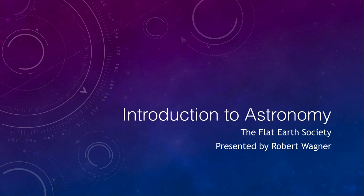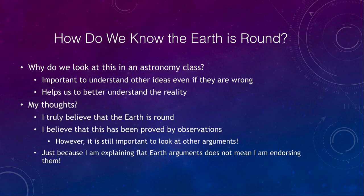Greetings and welcome to the introduction to astronomy. In this video we are going to look at the Flat Earth Society and what their understanding of the nature of the world is. And one of the reasons we want to look at this in an astronomy class is that Flat Earth ideas are not really astronomical. We really need to look at other ideas even if we know that they are wrong. I believe the Flat Earth people are completely wrong — the Earth is not flat, it is very much spherical, and we have significant evidence that has demonstrated that over the centuries.